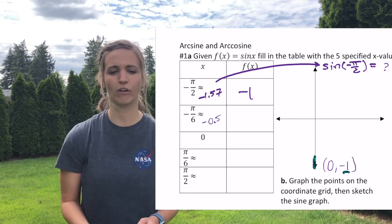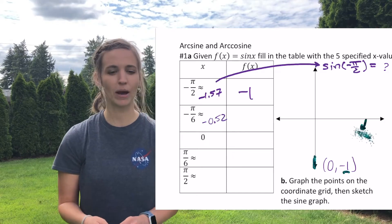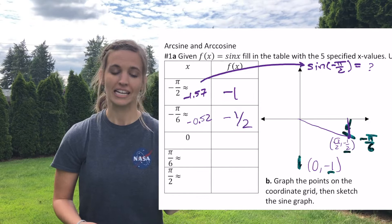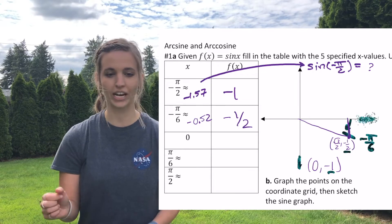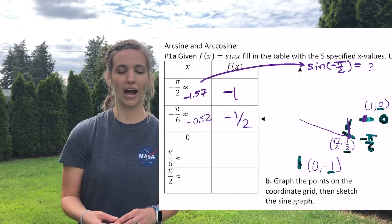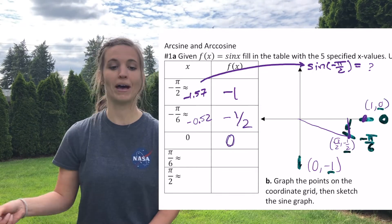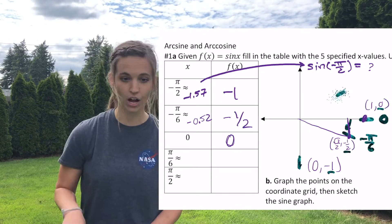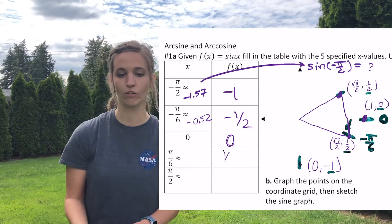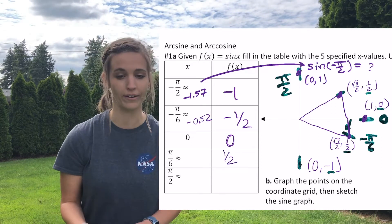Negative pi over 6: sine of negative pi over 6, going in the negative direction again, I'm going to get negative one half. Zero: zero's right here, I get zero. Pi over 6: now I'm back to counterclockwise, so that's one half. And then pi over 2 is 1.